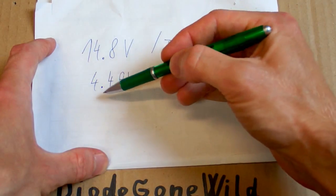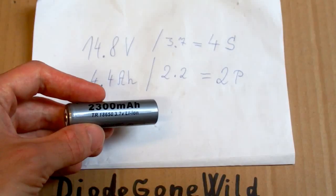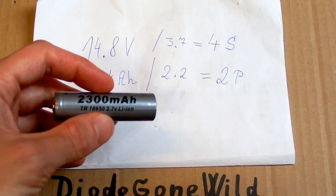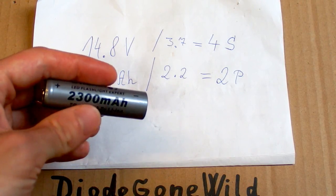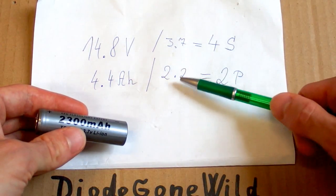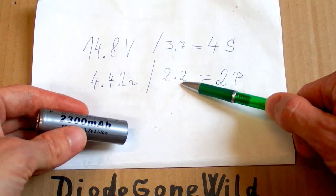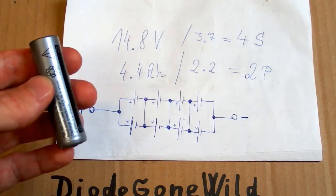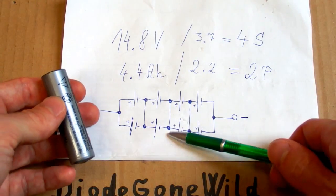And the capacity is 4.4 amp hours. And because a typical lithium-ion battery in standard 18650 size has about 2 or 2.5 amp hours, I guess those have about 2.2 amp hours and it means they are two in parallel. So in total there must be eight cells in this configuration.